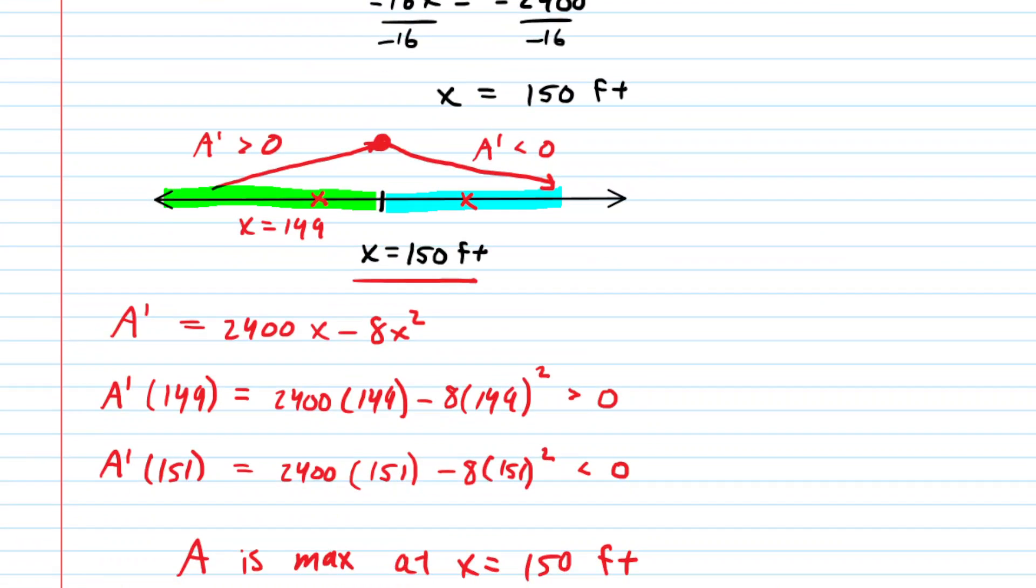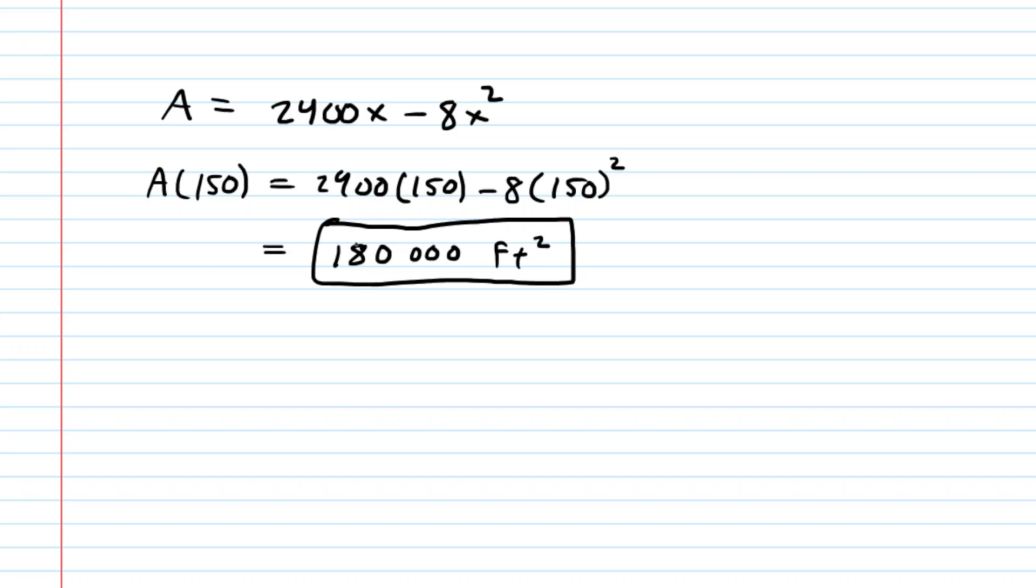So we're going to copy that and then we're going to go down and we're going to plug the x value that we had solved for to calculate the maximum area. So here we go. We're going to calculate the area when x equals 150. So just go ahead and plug 150 into your equation. And when you compute this, you will see your area is 180,000. This is area, so it's not feet, but rather feet squared. So this would be the final answer to the question, the maximum area that the fence will enclose.